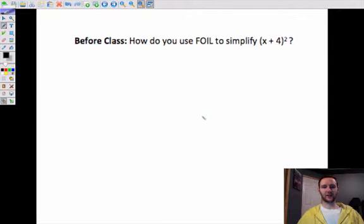Here's your before class. It says, how do you use FOIL to simplify x plus 4 squared? The key here is remembering squared means multiplied by itself. So really, this means that you are doing x plus 4 times x plus 4 because that's what squared means. And so you can either use FOIL or you can use distributive property.